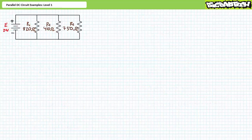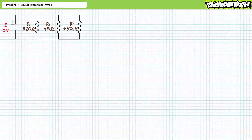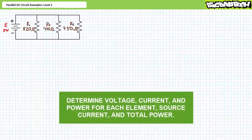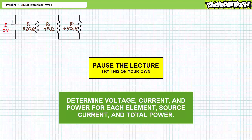Our next illustrated example features a 24-volt source in parallel with R1, an 820-ohm resistor, R2, a 410-ohm resistor, and R3, a 750-ohm resistor. We're again being asked to solve for the voltage drop across each element, the current through each element, the power dissipated by each element, the source current, and the total power. By all means, pause the lecture and try this on your own. If you're tracking, you should have obtained the following results.